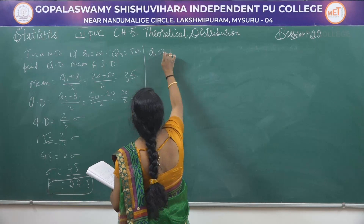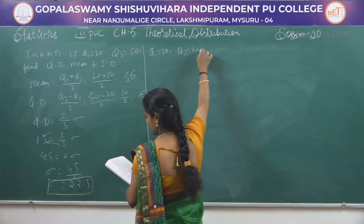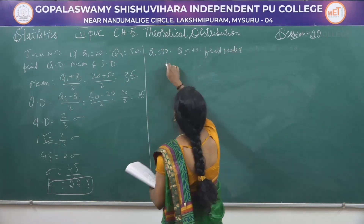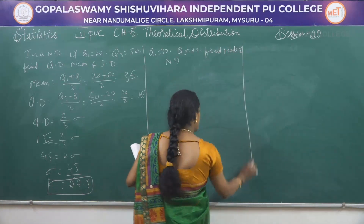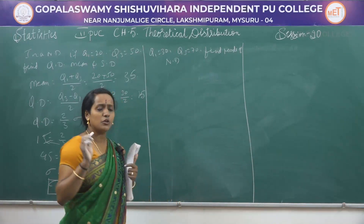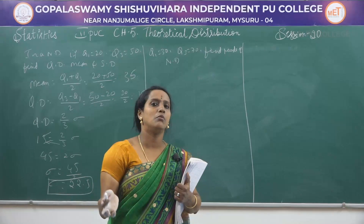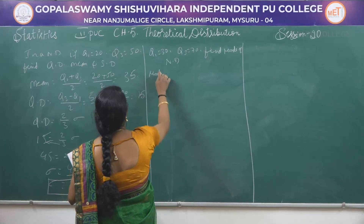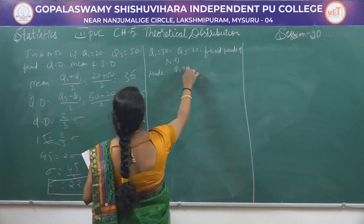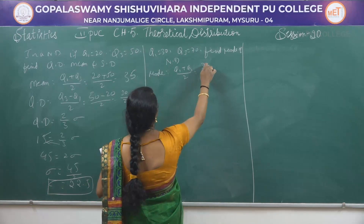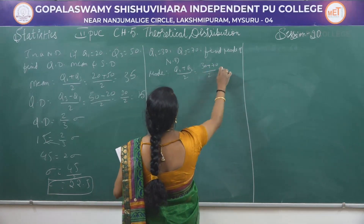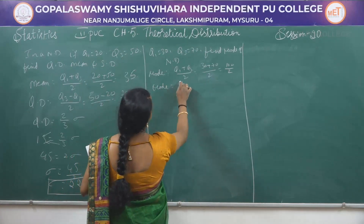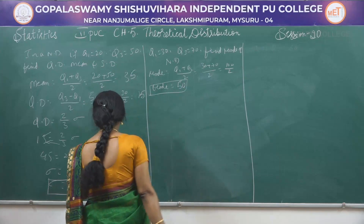Problem: If Q1 = 30 and Q3 = 70, find the mode of the normal distribution. We know that in normal distribution, mean = median = mode. So mode = (Q1 + Q3) / 2 = (30 + 70) / 2 = 100 / 2 = 50. Mode = 50.